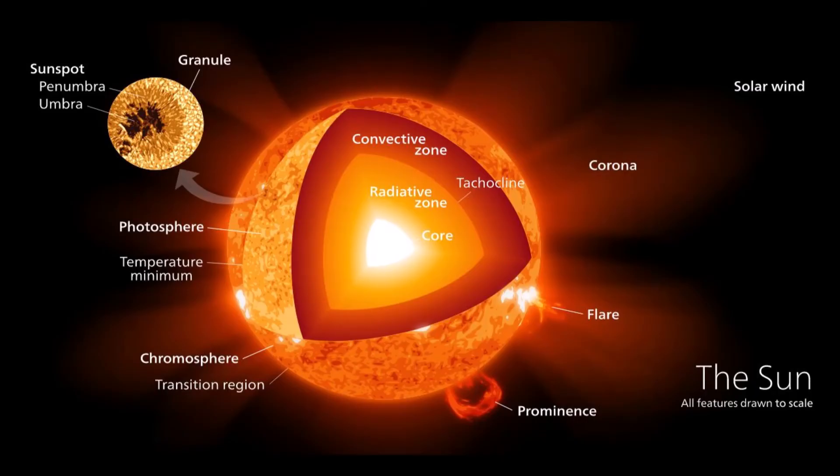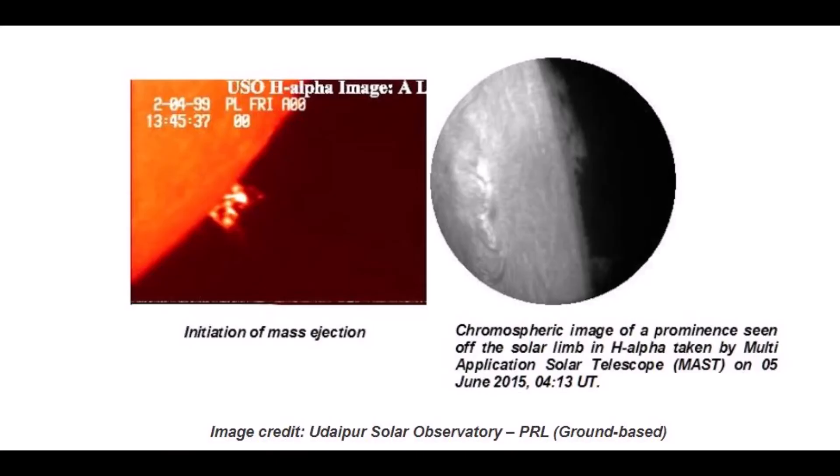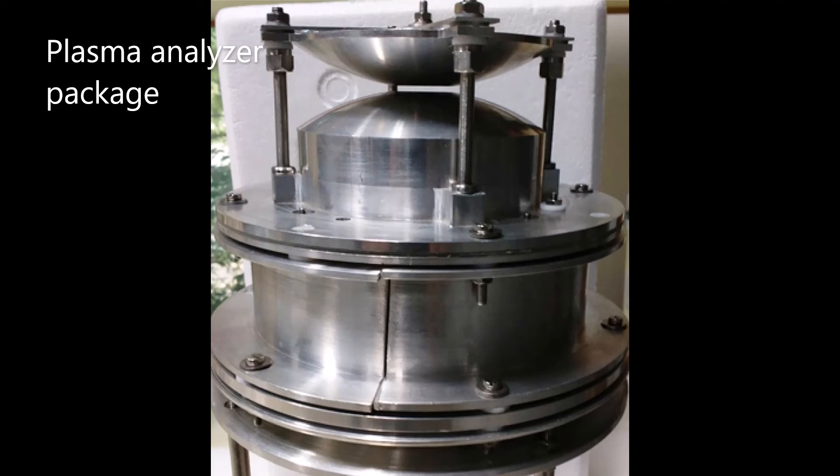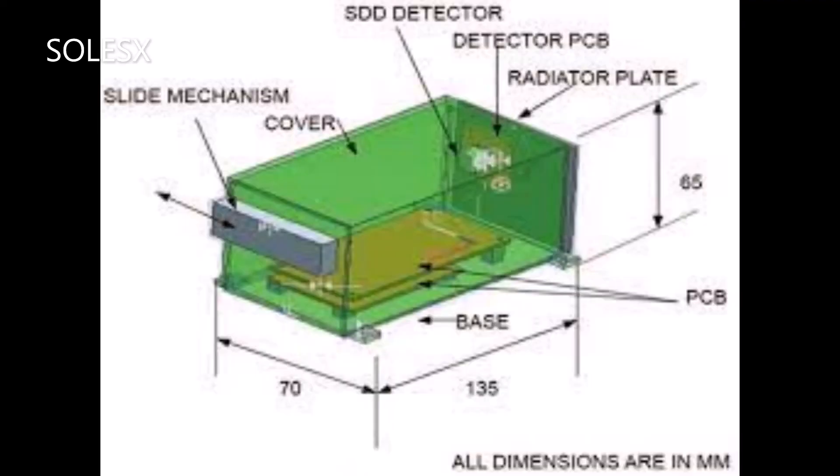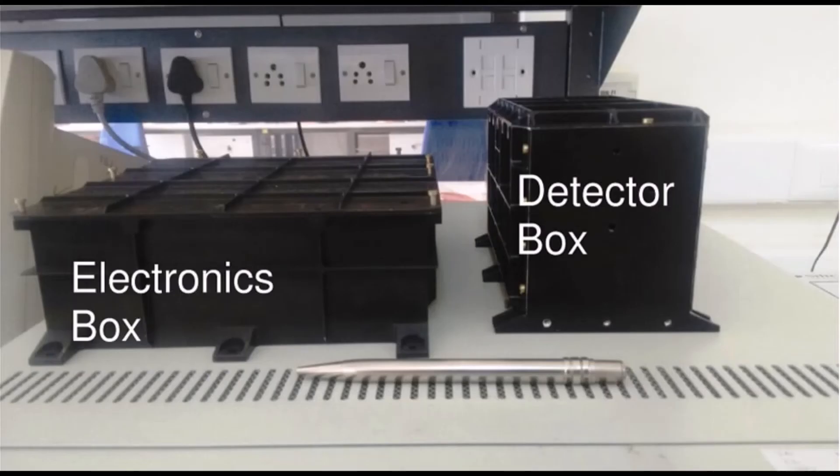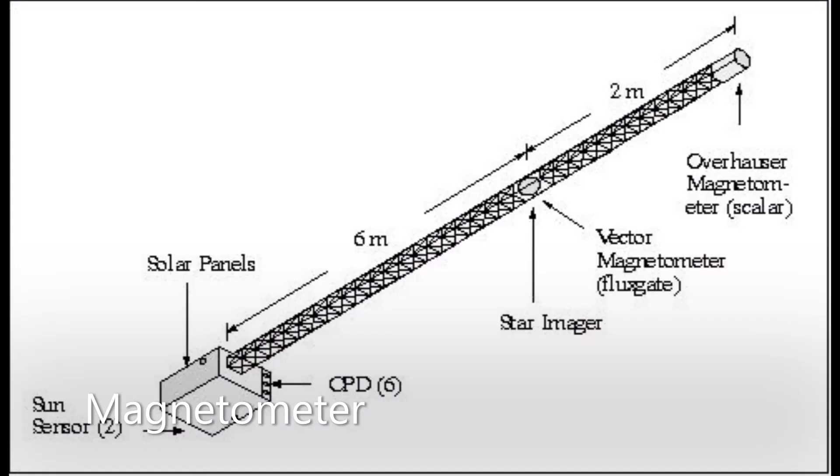Plasma analyzer package, solar low x-ray spectrometer and a high-energy L1 orbiting x-ray spectrometer and of course the magnetometer to measure the magnitude and nature of interplanetary magnetic fields.